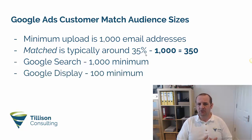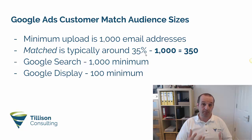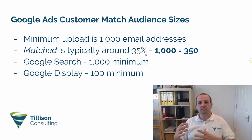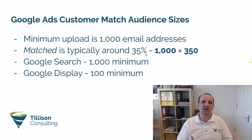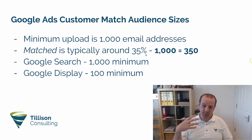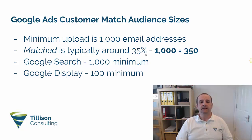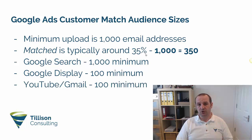With Google Display - where we target people with banner ads or maybe video ads - the news is better. You need 100 matched, so you're uploading about 300 email addresses or more. I would strongly recommend more because otherwise you're targeting a very small audience and your ads aren't really going to show that much. I'd probably be aiming for around 500 to 1000 minimum in your email list anyway. And if you want to run YouTube video ads or Gmail ads, again you need a minimum of 100 people in that audience too.